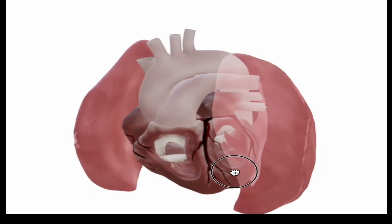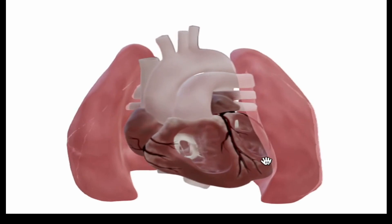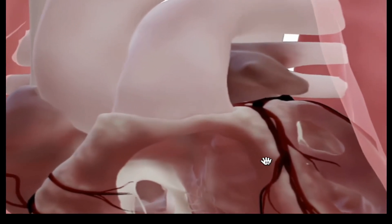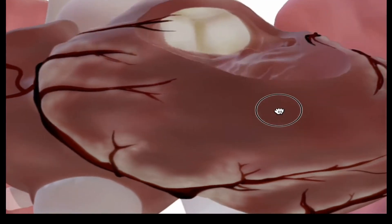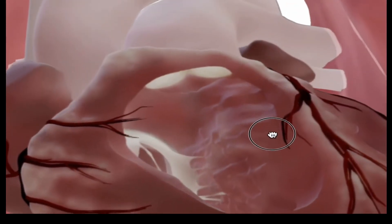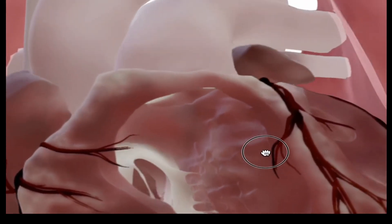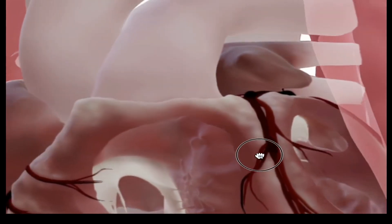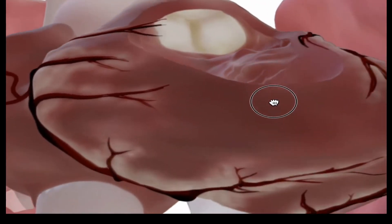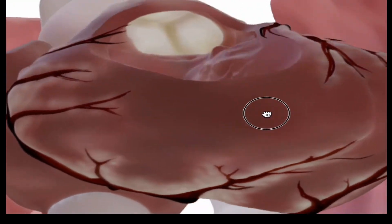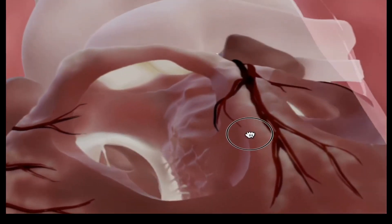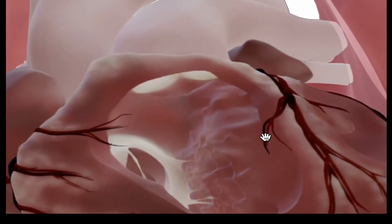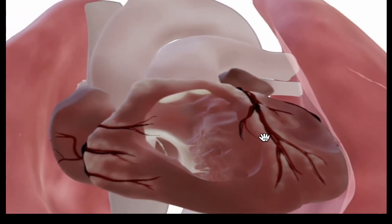In acute PE, mechanical obstruction of pulmonary vasculature and vasoconstriction caused by the release of vasoactive mediators lead to a sudden increase in right ventricular (RV) afterload. This results in RV muscle stretch, increased RV contractility due to neurohumeral activation, dilatation, and eventually failure.